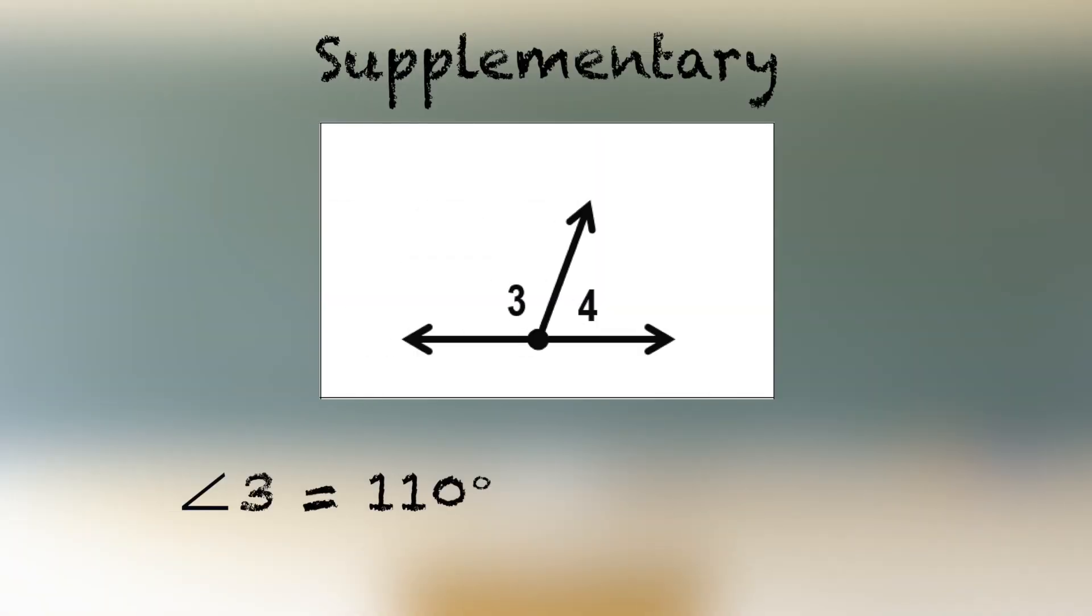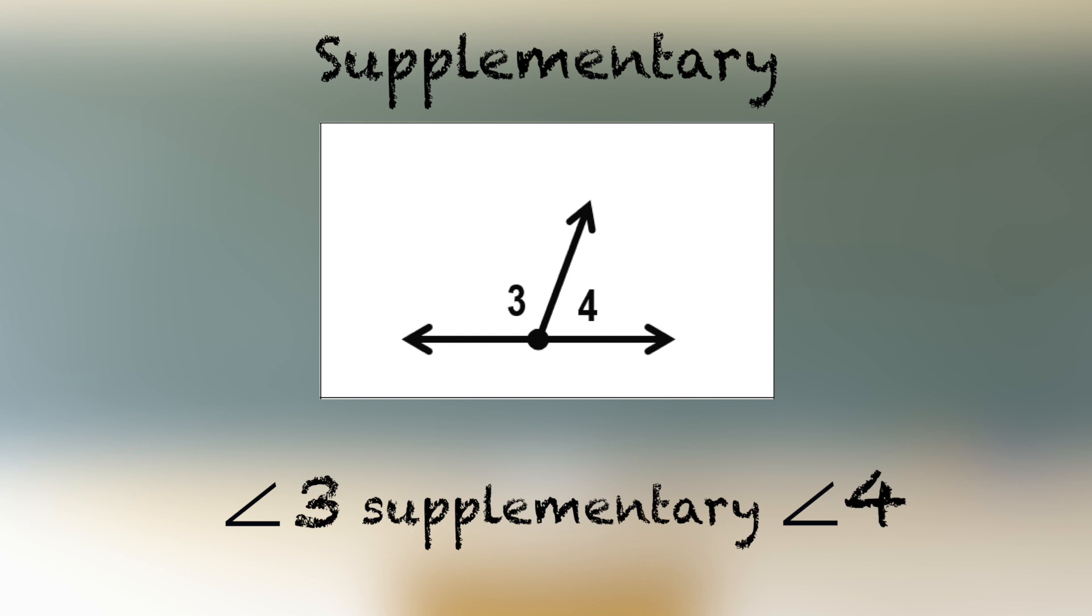Angle 3 equals 110 degrees, and angle 4 equals 70 degrees. 70 degrees plus 110 degrees equals 180 degrees. So angle 3 is supplementary to angle 4.